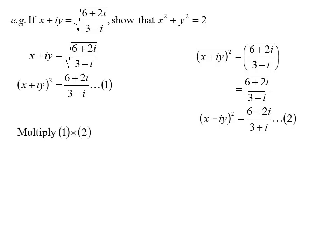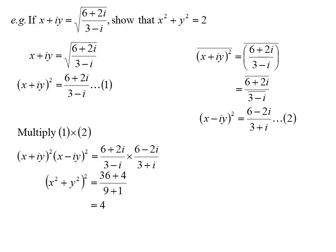If I multiply these two expressions together, nice, because both of them become difference of two squares. So on the left-hand side I get X squared plus Y squared squared. On the right-hand side, difference of two squares, which is actually the sum of two squares.